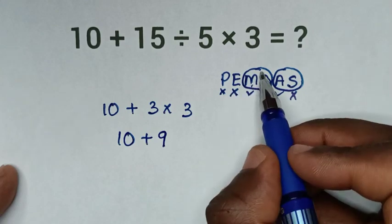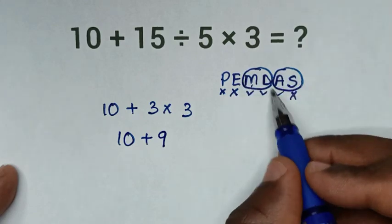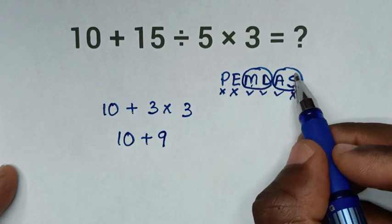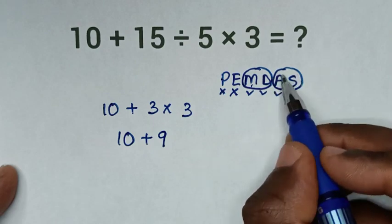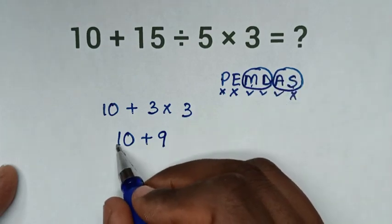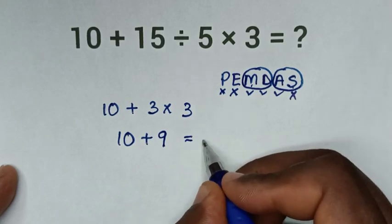Now we've finished this group and we'll come into the group of addition and subtraction. We don't have subtraction, so we'll deal only with addition: 10 plus 9 equals 19.